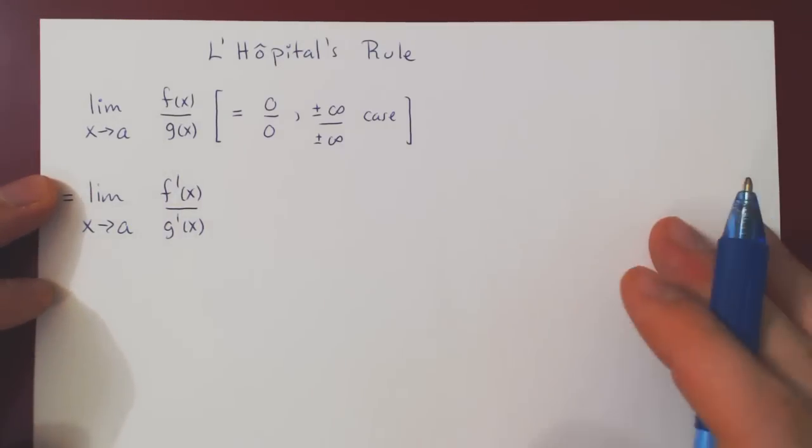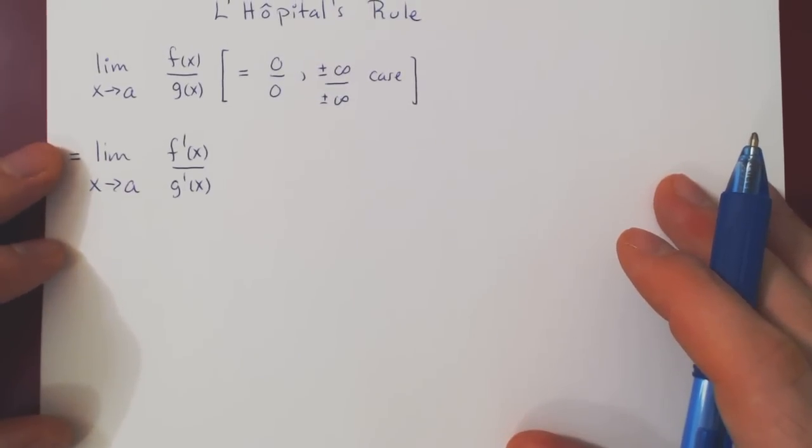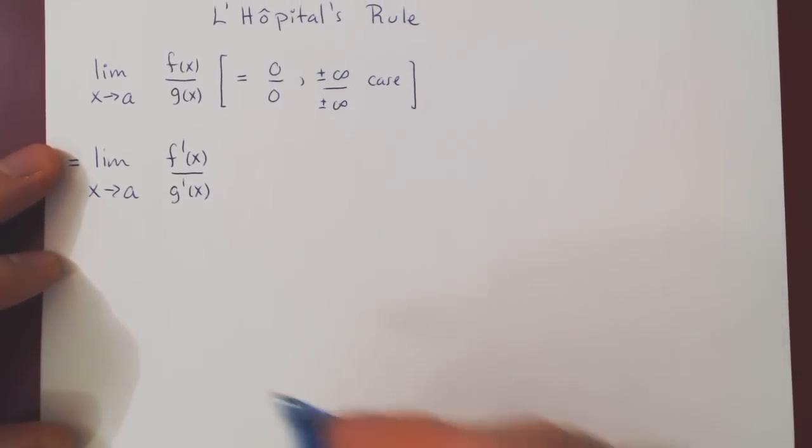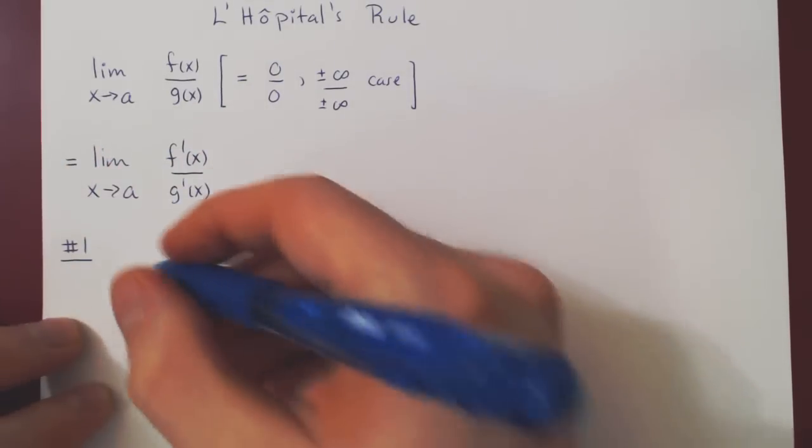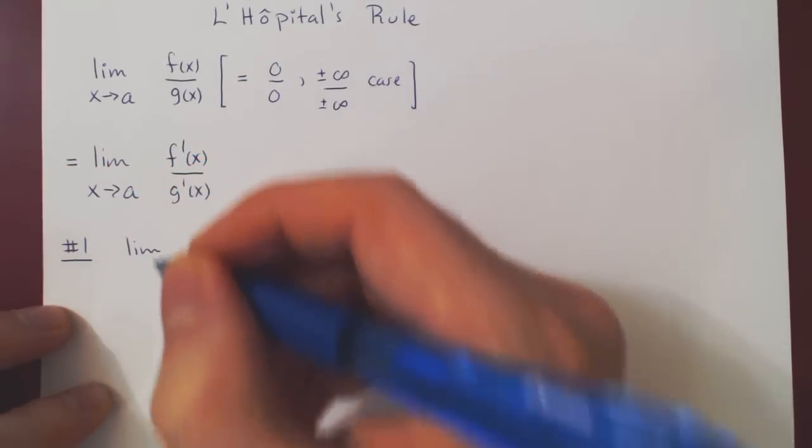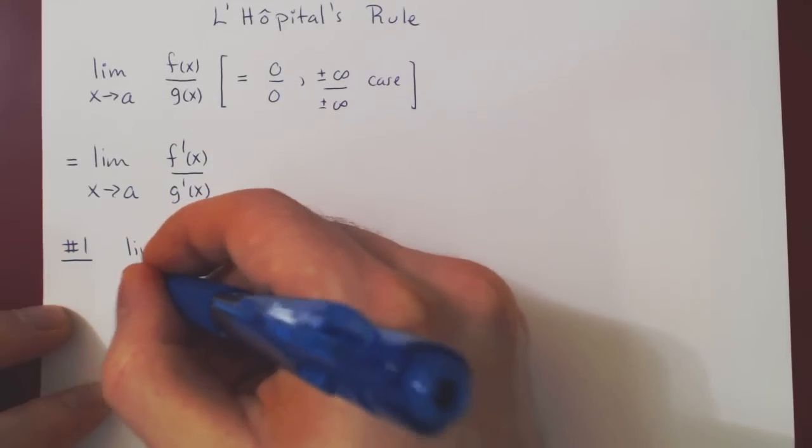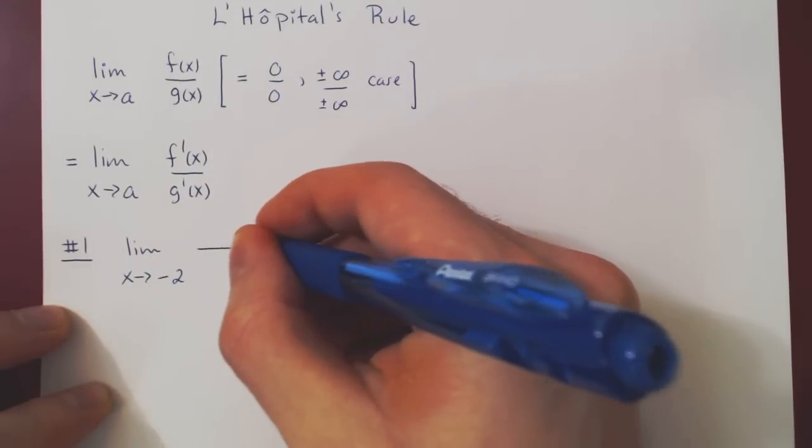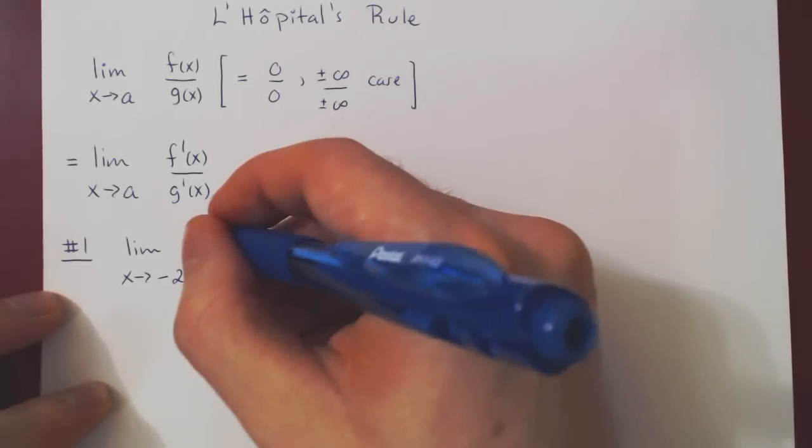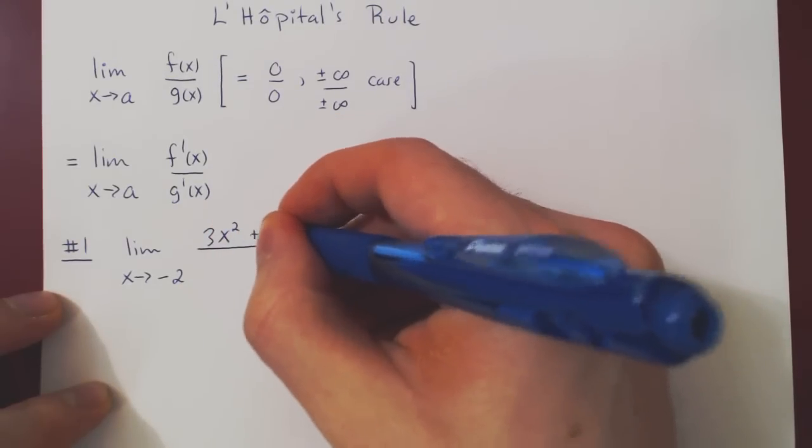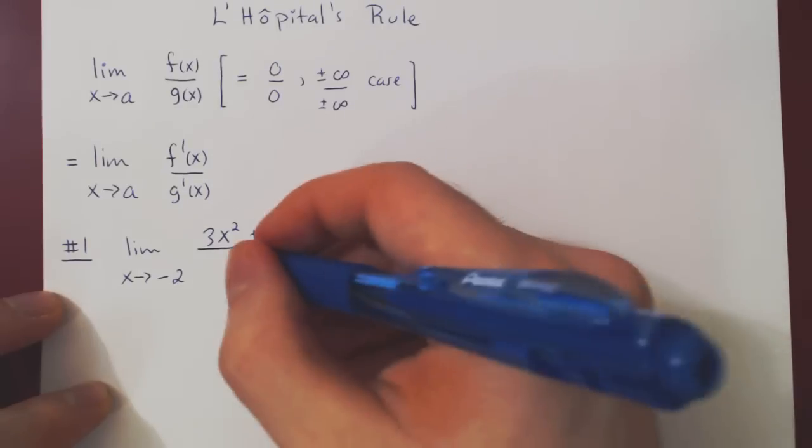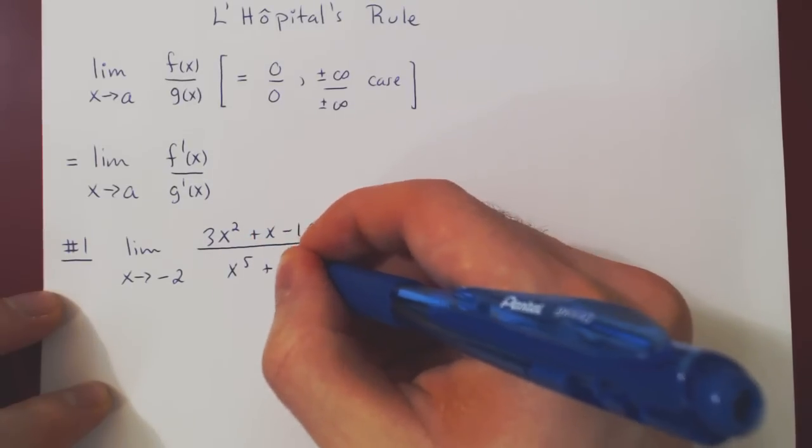So let's consider a few examples of this. Example number one. Let x approach negative 2 and ask what happens to the expression 3x squared plus x minus 10 over x to the 5 plus 32.